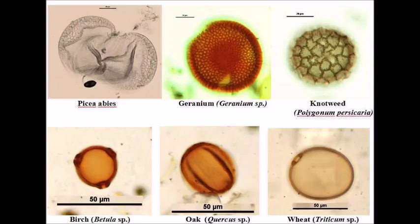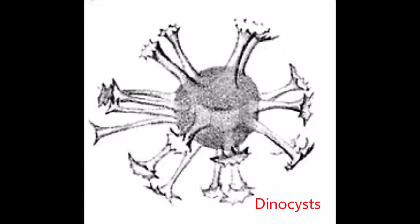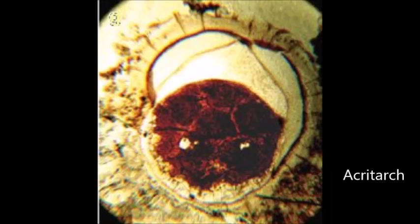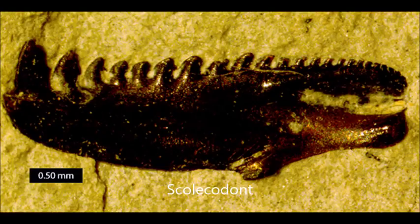Palynomorphs can be, as mentioned earlier, pollen grains and spores, but they can also be orbicules, dinocysts, acritarchs, chitinozoans, and scolecodonts.